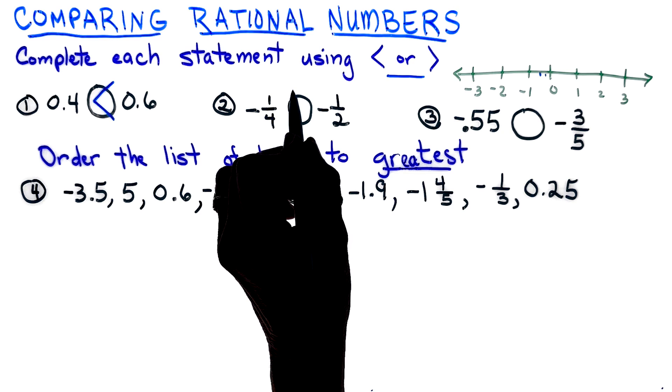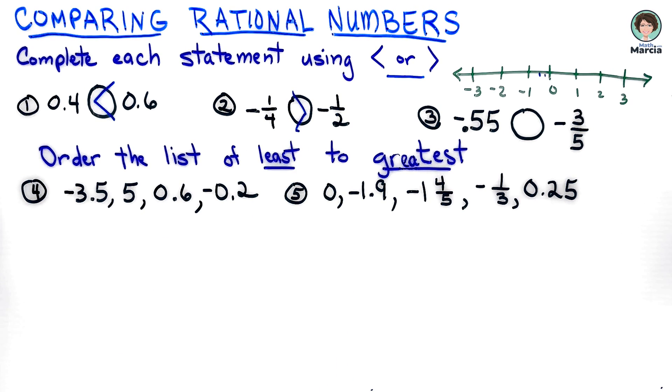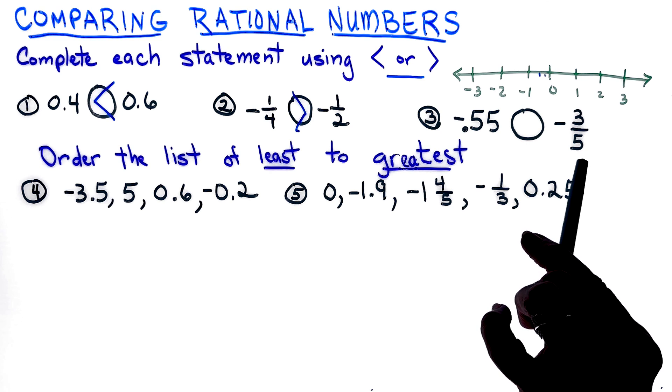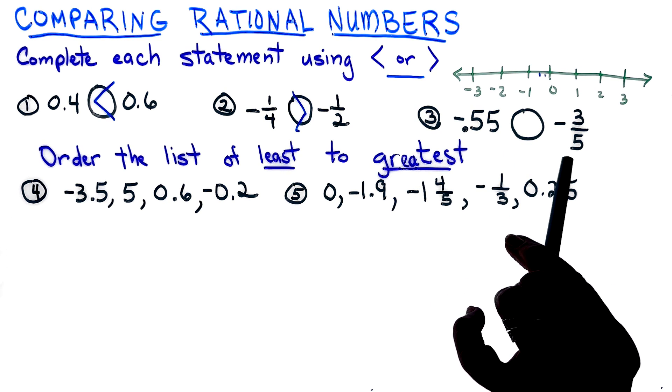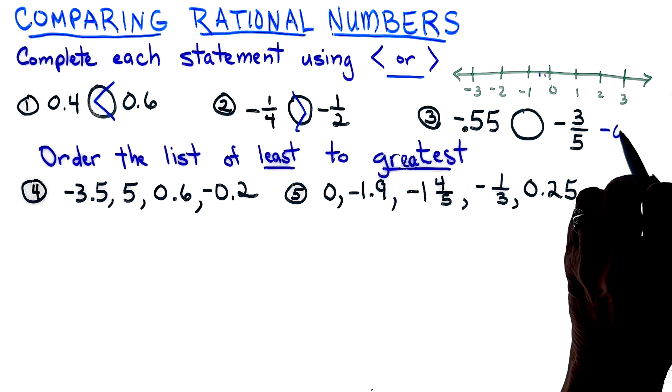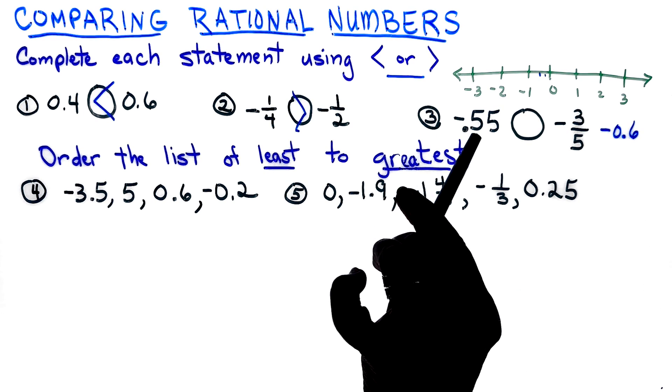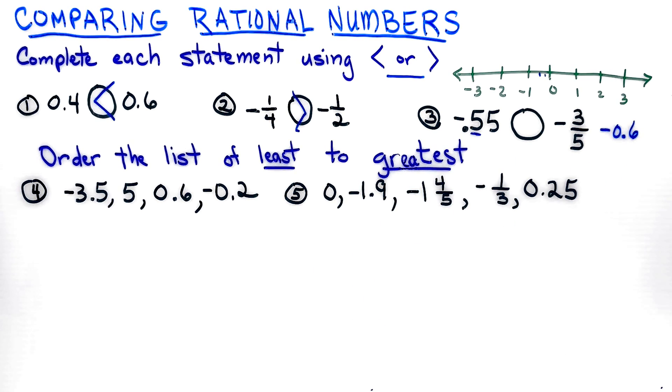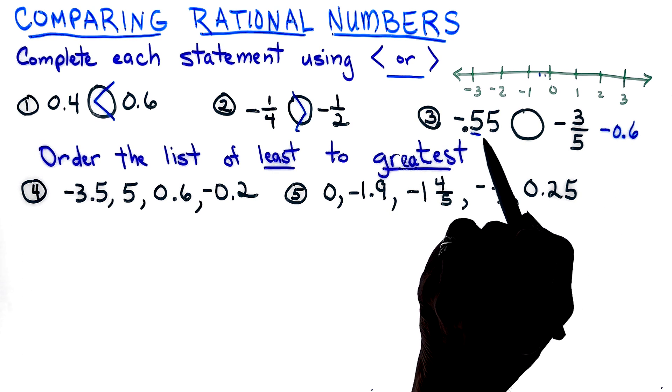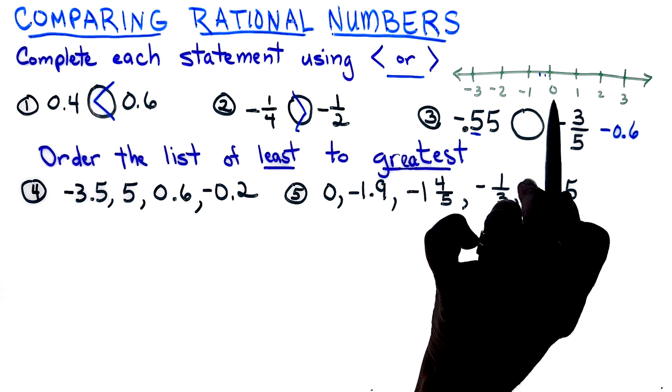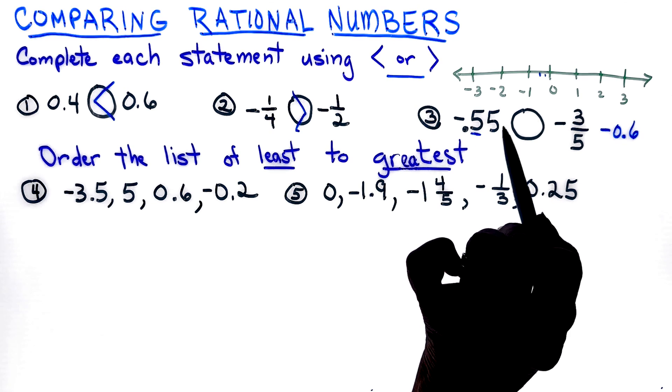Looking at the next one, we have a decimal and this time we have a fraction. To make your life easy, I would change three-fifths to a decimal. We know that three-fifths changed to a decimal is negative six tenths. Now I have negative fifty-five hundredths and I have a negative six tenths. I'm just going to look at the tenths place and I can see that the five is less than the six. Remember, the larger the number, the further away from zero it is, so we know that our negative fifty-five hundredths is going to be greater than, just by a little bit, our negative six tenths.